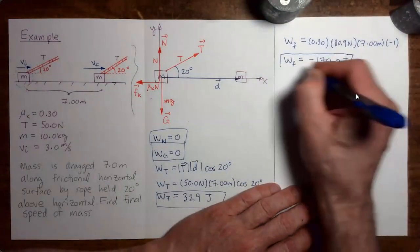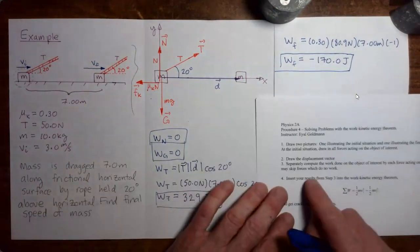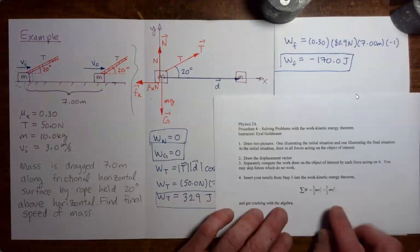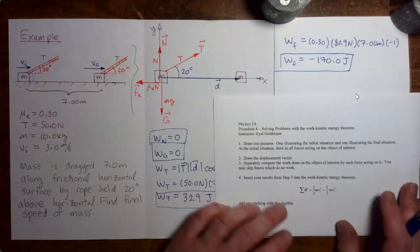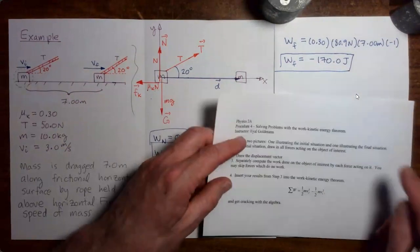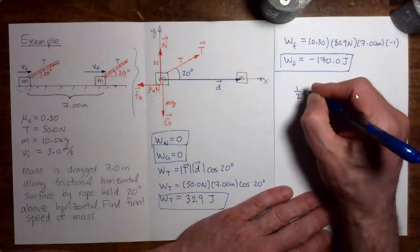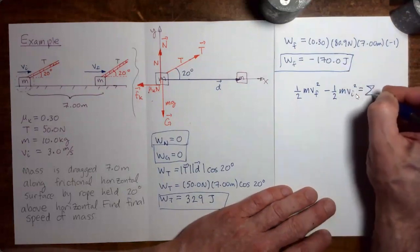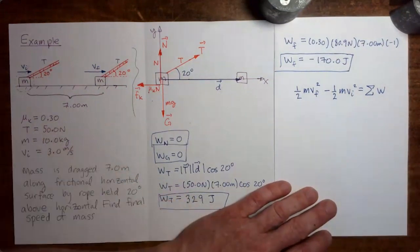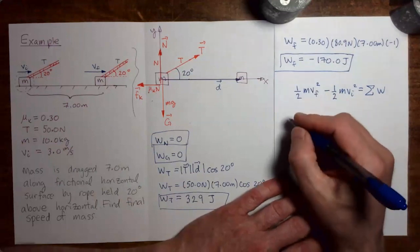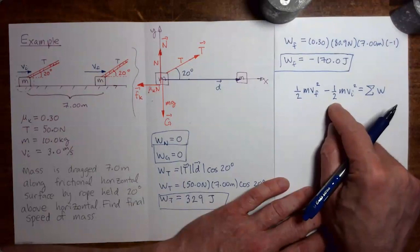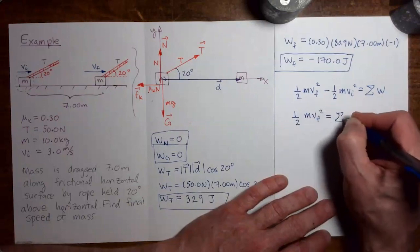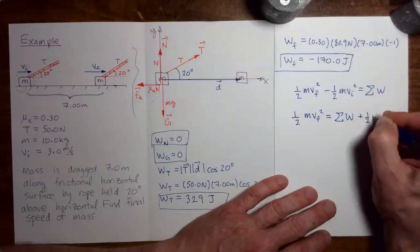We have now done step three on the handout, which is to separately compute the work done by each force. Now we go to step four, which is to plug into the work-kinetic energy theorem. The theorem is: one-half times mass times final speed squared, minus one-half times mass times initial speed squared, equals the total work done by all forces acting on the object. Rearranging, we get: one-half mass times final speed squared equals total work done by all forces plus one-half mass times initial speed squared.